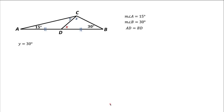Now we're almost done. We know angle Y is 30 degrees, and we want angle X. Angle X is an exterior angle to triangle ACD, and it equals the sum of angle A (15 degrees) and angle Y. I'll leave that as an exercise to verify. So the final answer is X equals 15 degrees plus Y, which is 45 degrees.